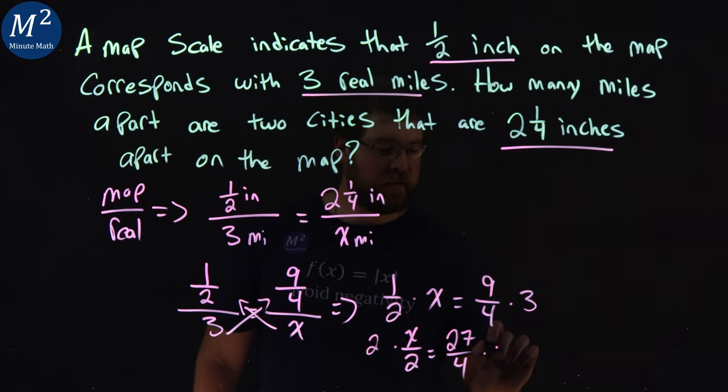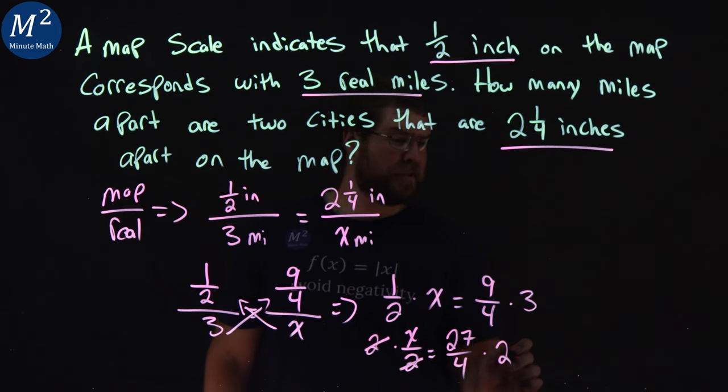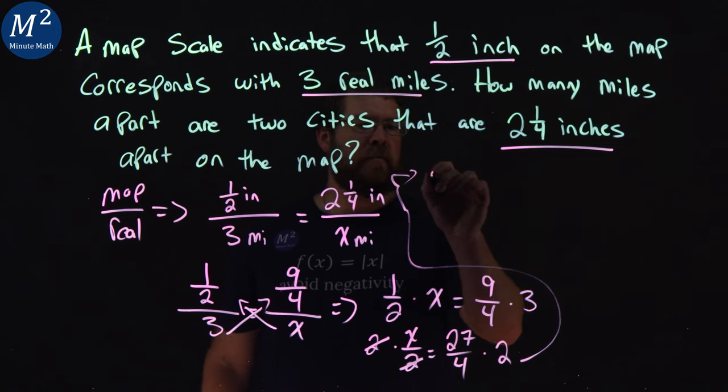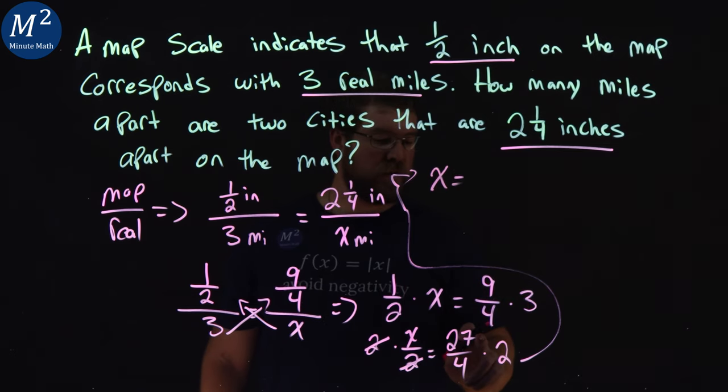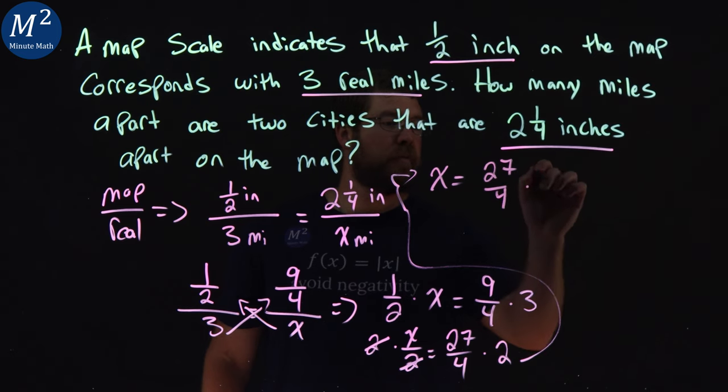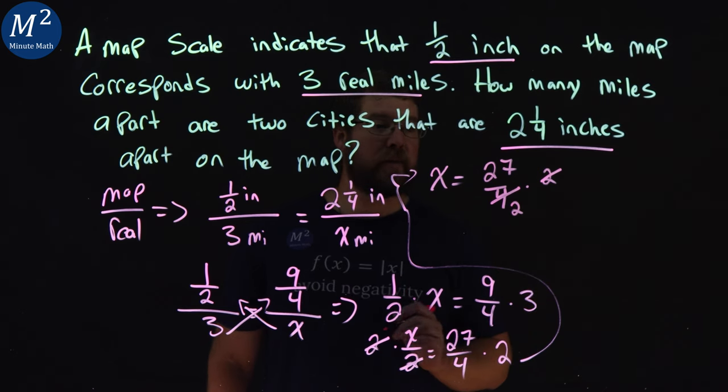From there let's multiply two to both sides and it cancels out here on the left. We have x equals twenty-seven over four times two. Well luckily for us two and the four cancel out because it's a two in the denominator here.